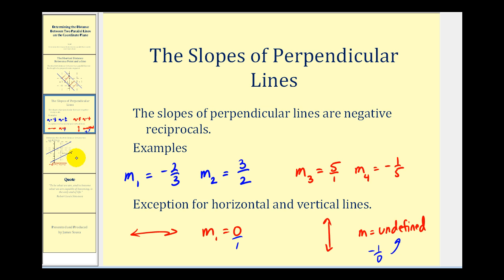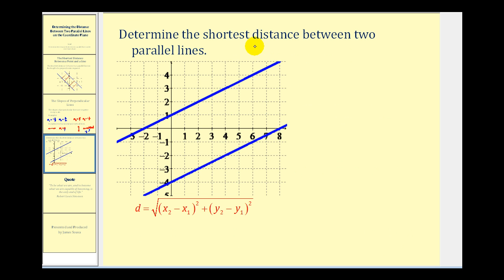Let's go ahead and take a look at our example. Here we want to determine the shortest distance between these two parallel lines. So step one, we need to find a convenient point on either line. So, for example, this point here is convenient because the coordinates are two, negative three.